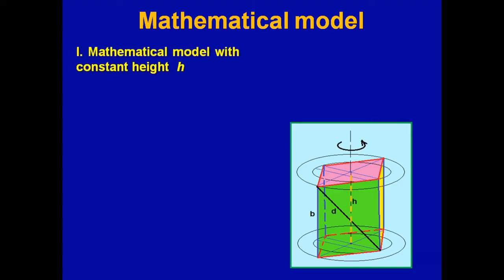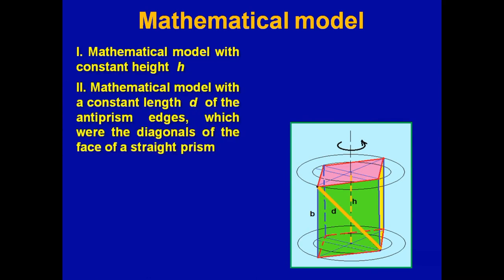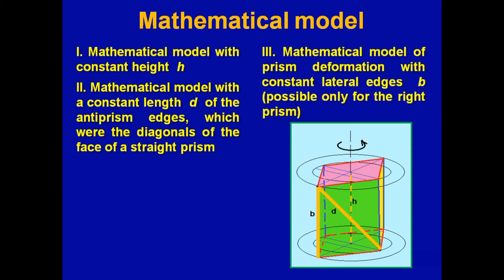The project considers various models for a twisted antiprism. Mathematical model with a constant height h. Mathematical model with a constant length d of the antiprism edges, which were the diagonals of the face of a straight prism. And mathematical model of prism deformation with a constant lateral edge b, that possible only for the right prism.